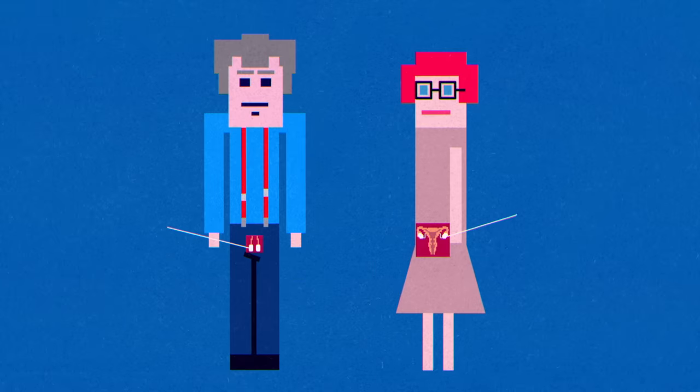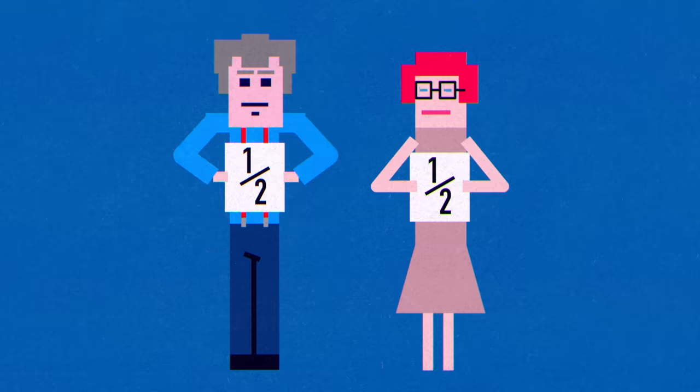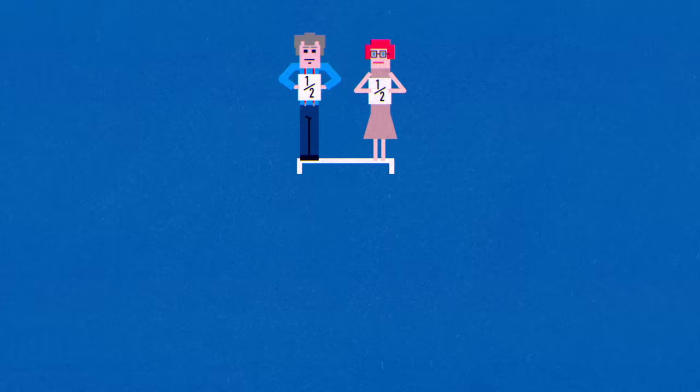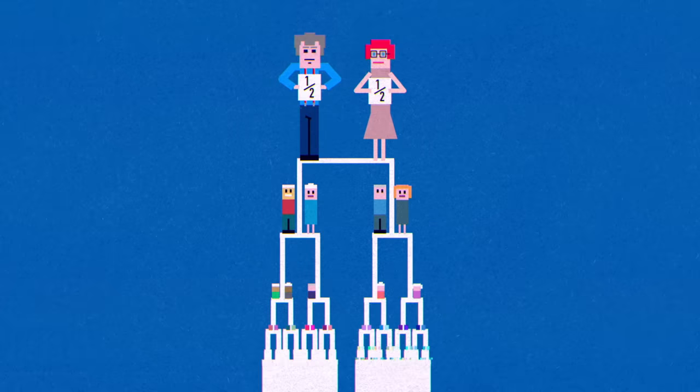Recombination happens before conception, so you get exactly half of your DNA from each parent. But going further back, things get more complicated.